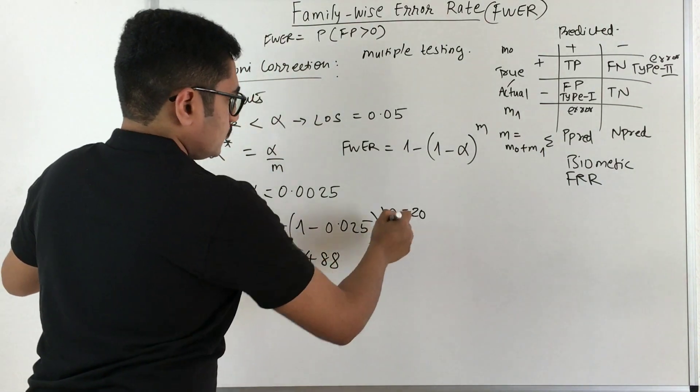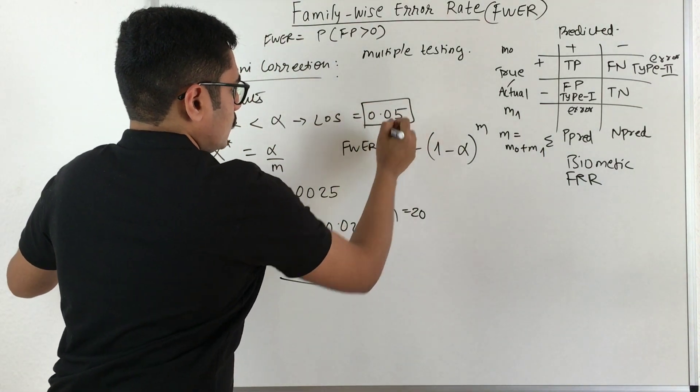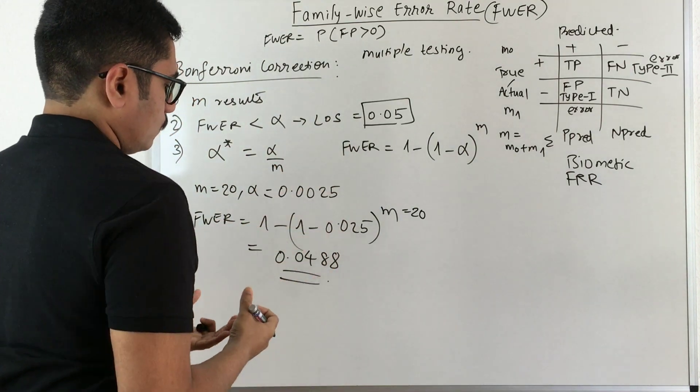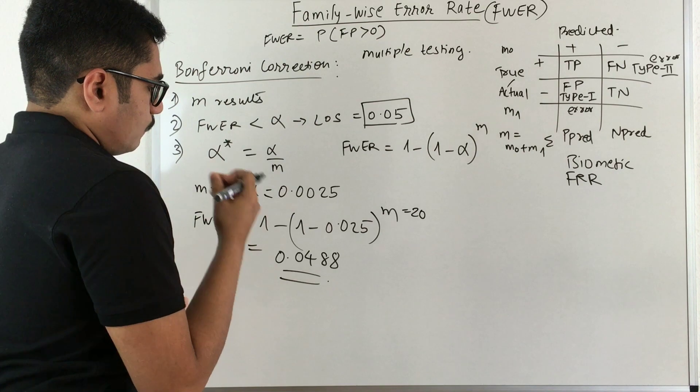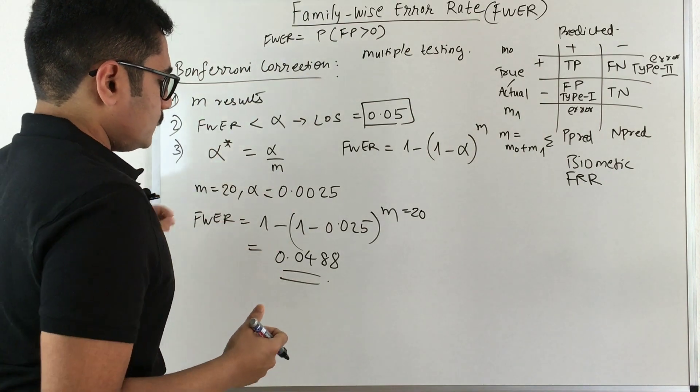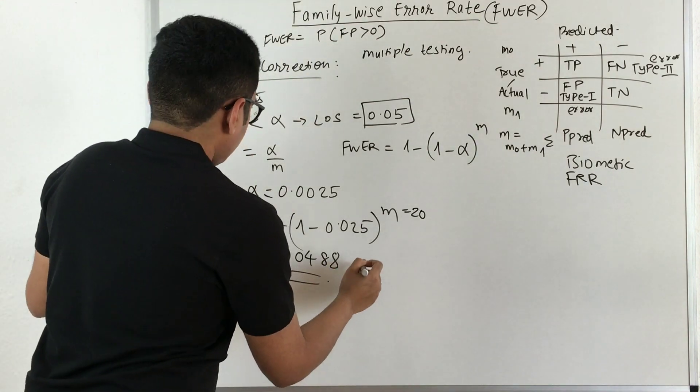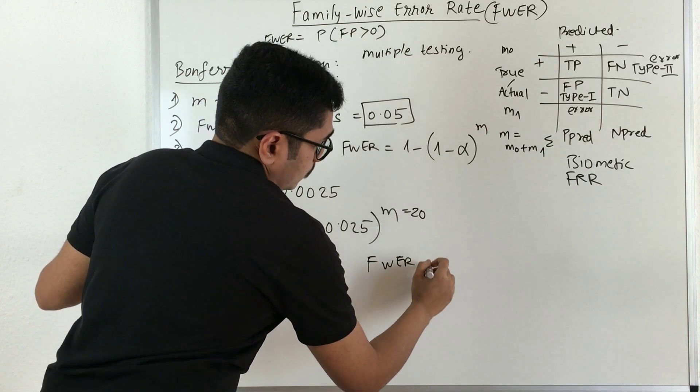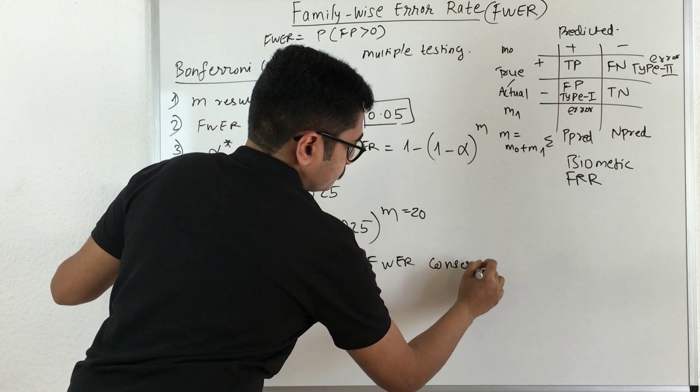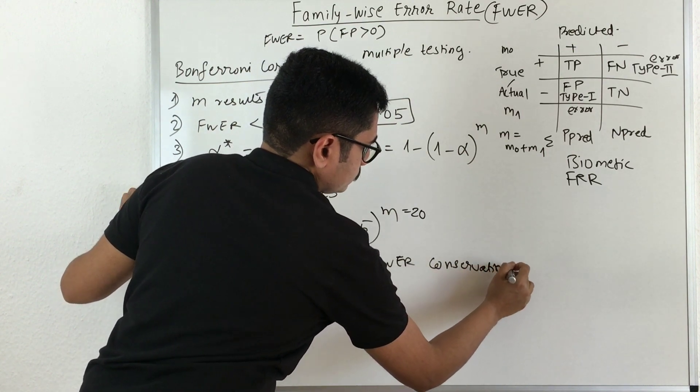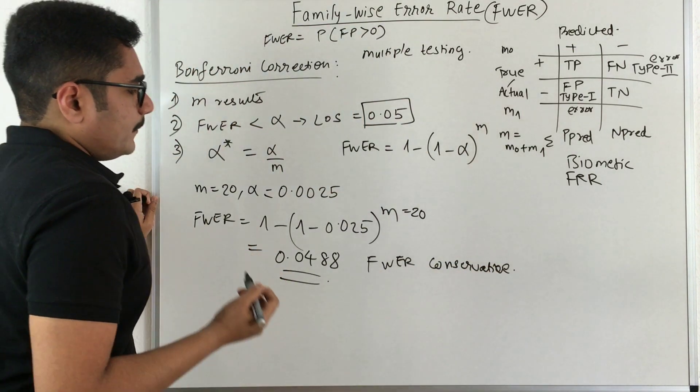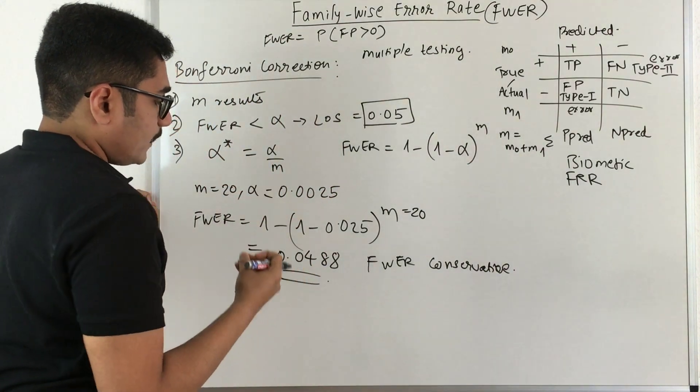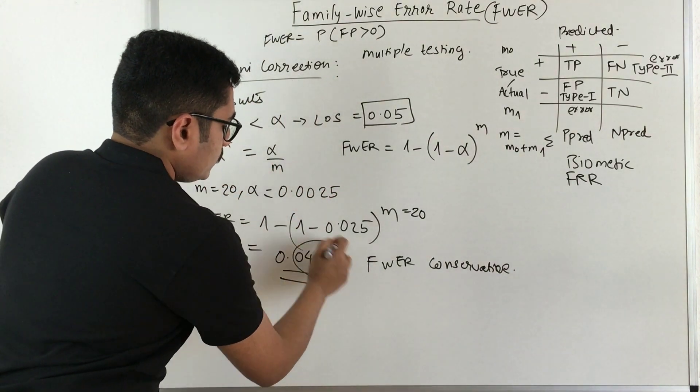Now if you compare this value with the standard LOS, it's very much close, or we can say that it's very much under the shade of 0.05. So what we can observe from this is that FWER or this correction technique for FWER is very much conservative, that means it will calculate the probability or identify the false positive with only this much probability.